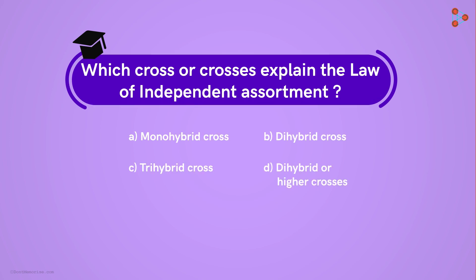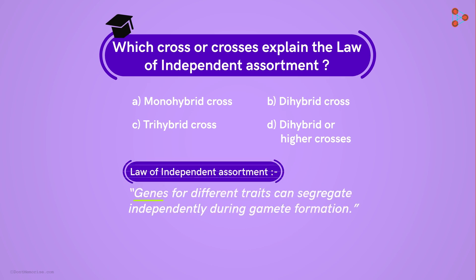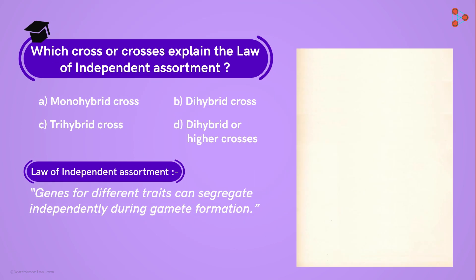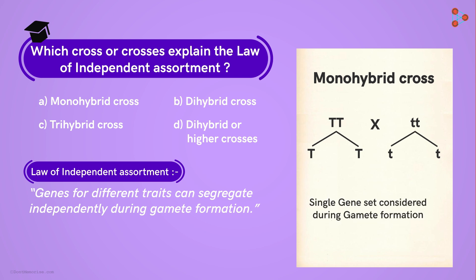Think about the law first! It states that genes for different traits can segregate independently during gamete formation! Now if we consider a monohybrid cross, then the event of assortment of genes is ruled out as there is only one pair considered at a time!